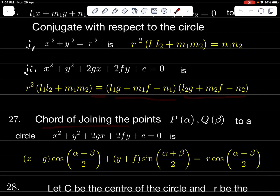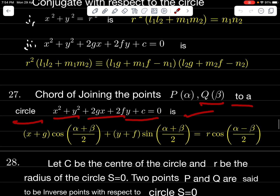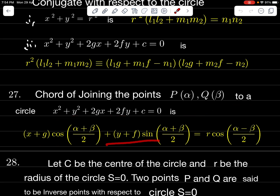Chord joining points P(α) and Q(β) on the circle x² + y² + 2Gx + 2Fy + C = 0: (x + G)cos((α + β)/2) + (y + F)sin((α + β)/2) = r·cos((α − β)/2).